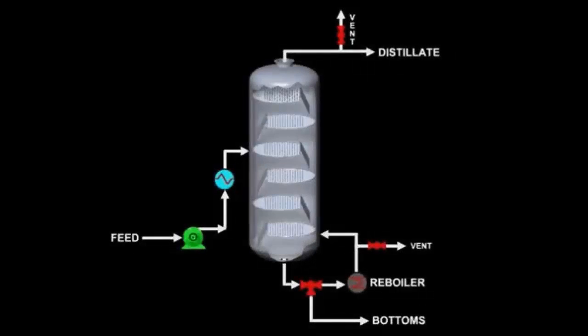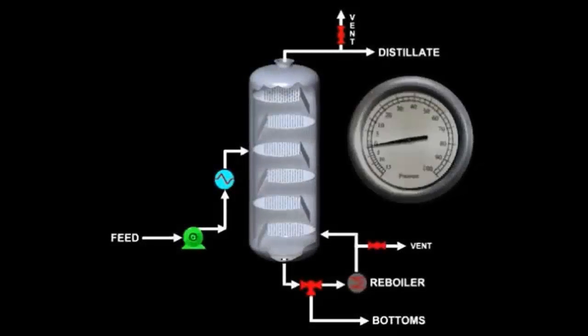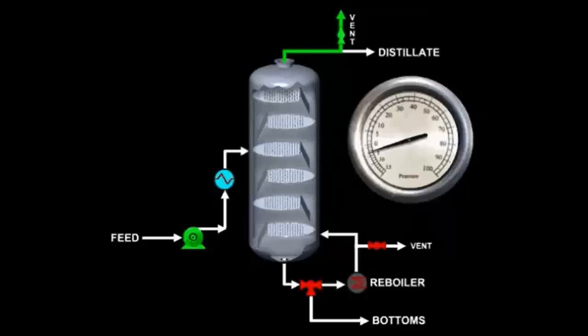The reverse practice is used for columns operating under a vacuum. The column is opened at the top to generate the vacuum. Again, this allows the vapor to flow up through the column in the design direction.